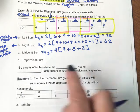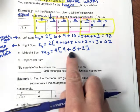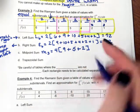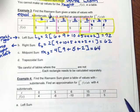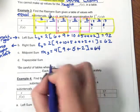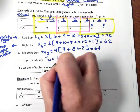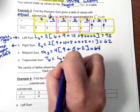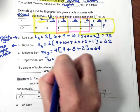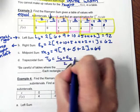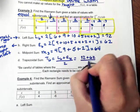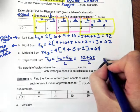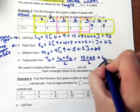This gives me 4 times 9 plus 4 times 5 plus 4 times 2, which is 64. For the trapezoidal sum with six subintervals, I take my left sum and right sum and divide by two: 72 plus 62 divided by 2 gives me 67.